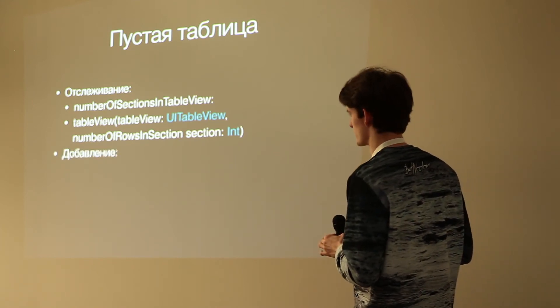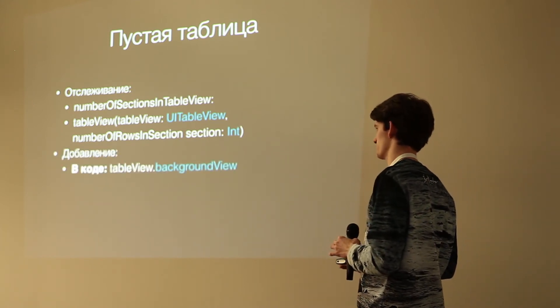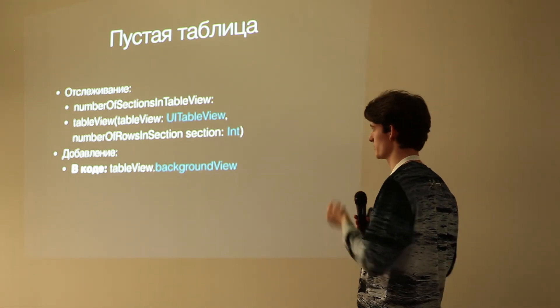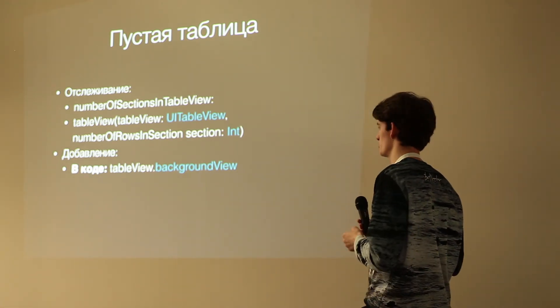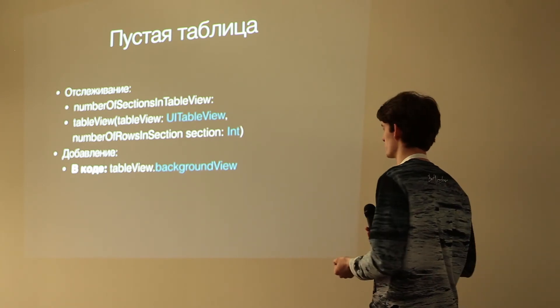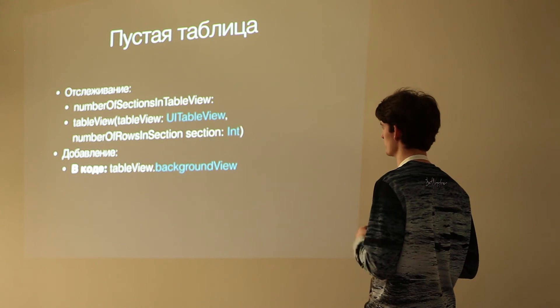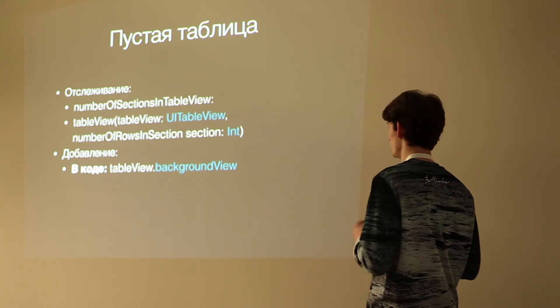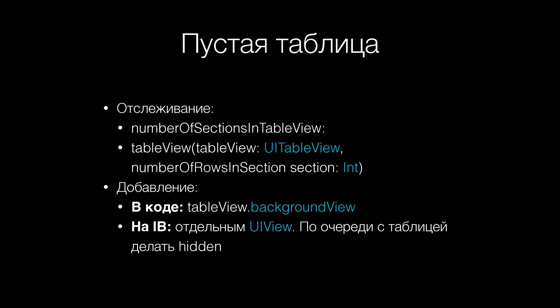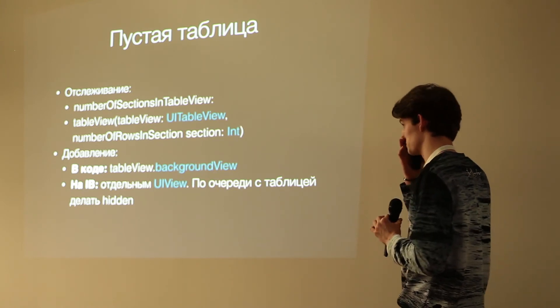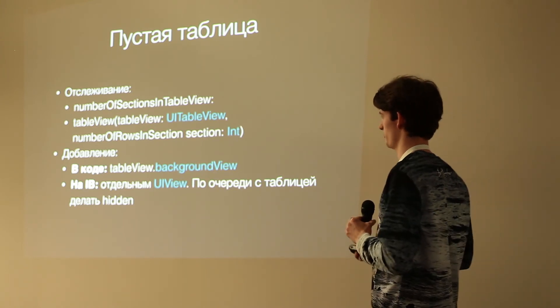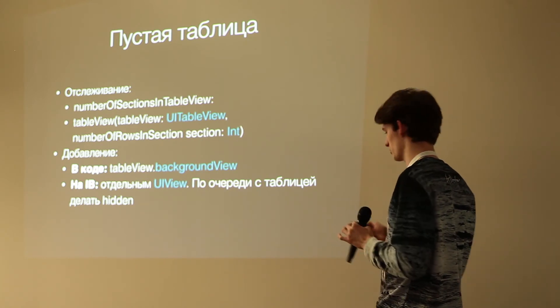Как же добавлять пустой экран? Есть два сценария — мне одинаково нравятся, но второй мне привычнее. Первый — в коде: у вас есть backgroundView таблицы, и если таблица plain, он ничем не занят. Можно создать лейбл, сказать ему выровняться по центру и добавить на этот view. Второй сценарий — я просто на storyboard или в xib добавляю отдельный view, задаю constraint по центру таблицы, и по очереди делаю hidden то таблицу, то этот view в методах numberOfSections и numberOfRows.